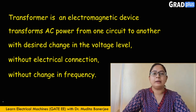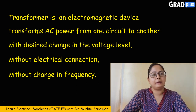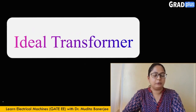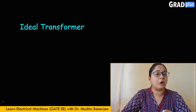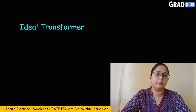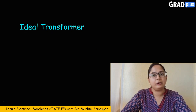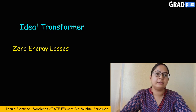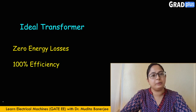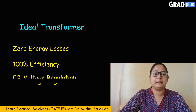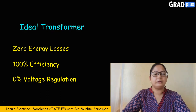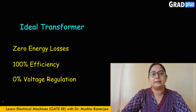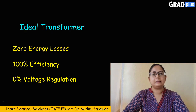Now we will see what is an ideal transformer and what is a practical transformer. An ideal transformer is basically a theoretical model of a transformer which has zero energy losses — meaning there is no core loss, no hysteresis loss, and no eddy current loss. Its efficiency is equal to 100% and the voltage regulation is equal to 0%. An ideal transformer does not exist in real life; it is only used to understand and analyze the practical transformer.